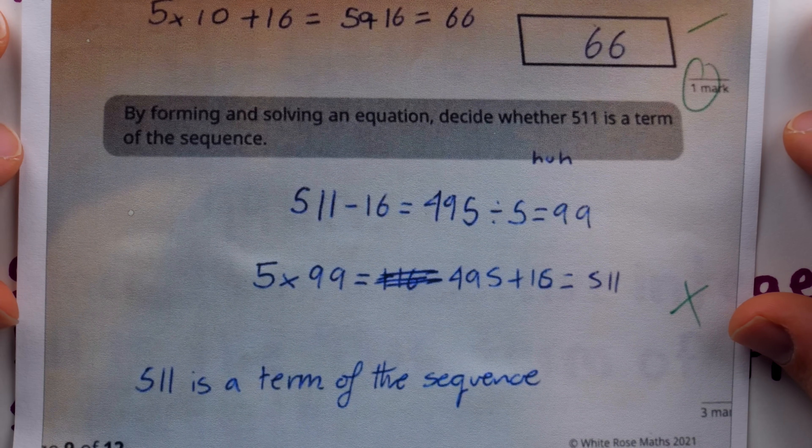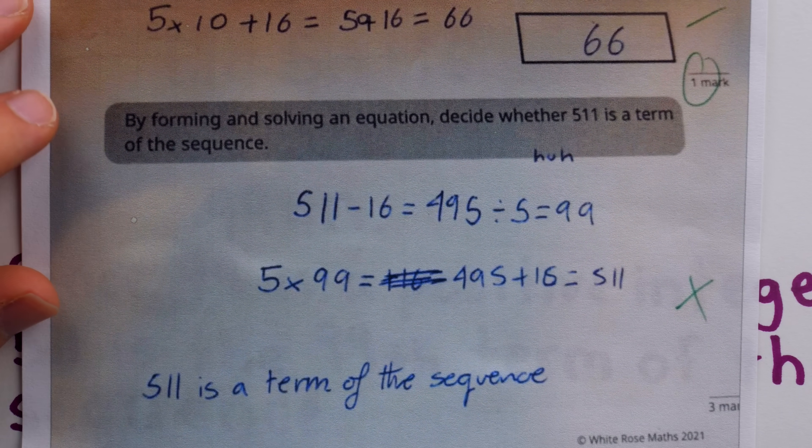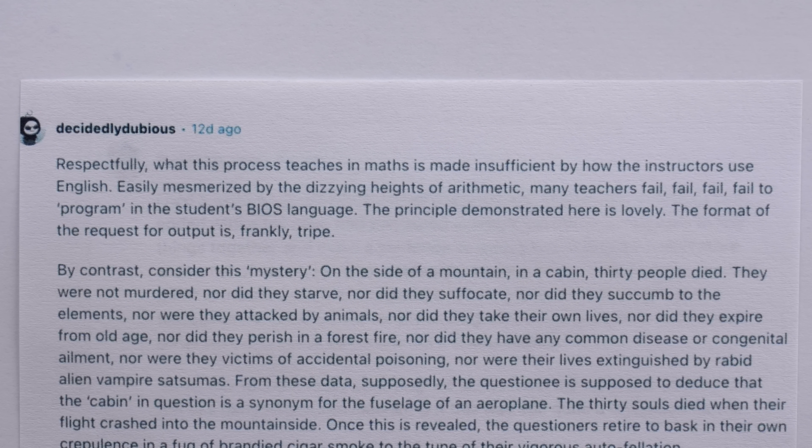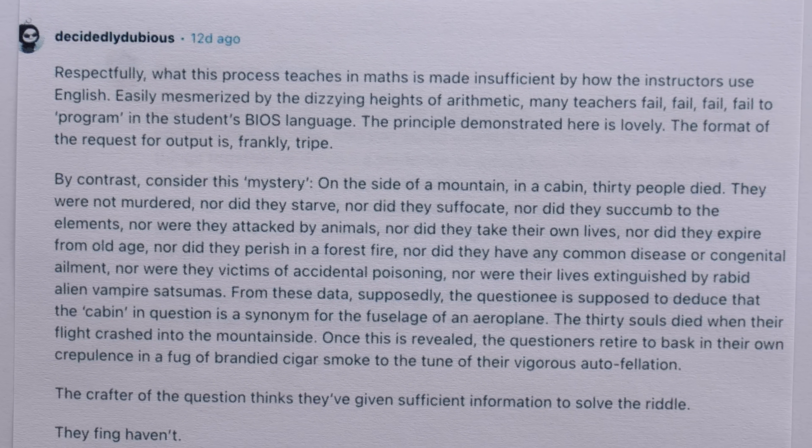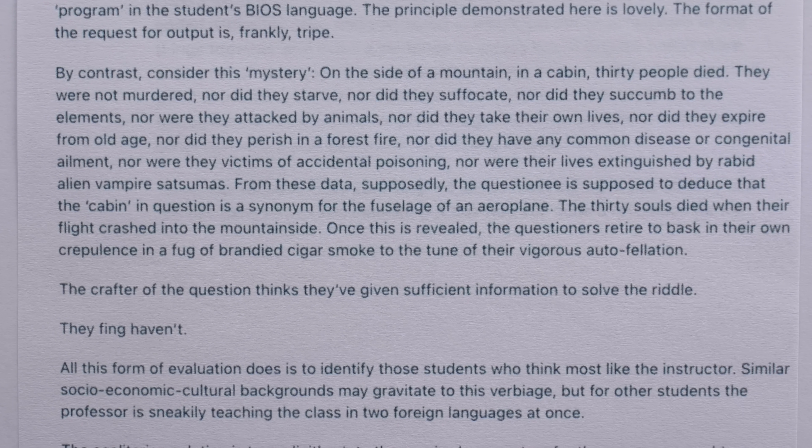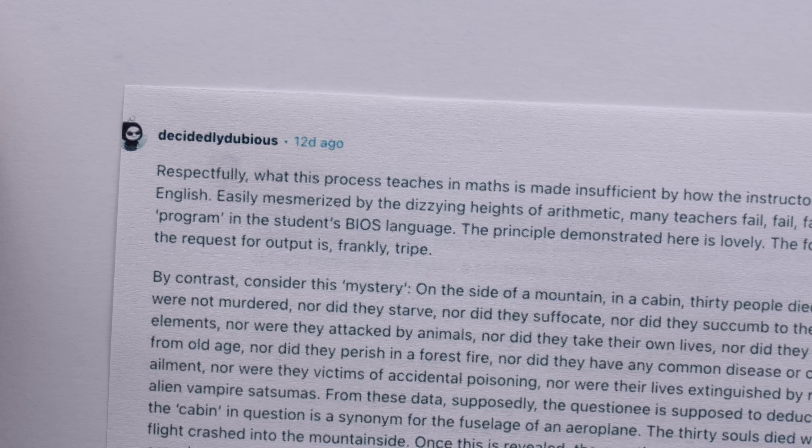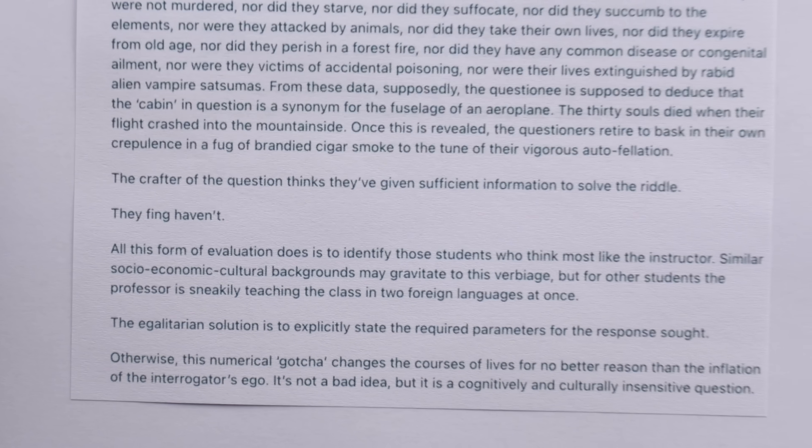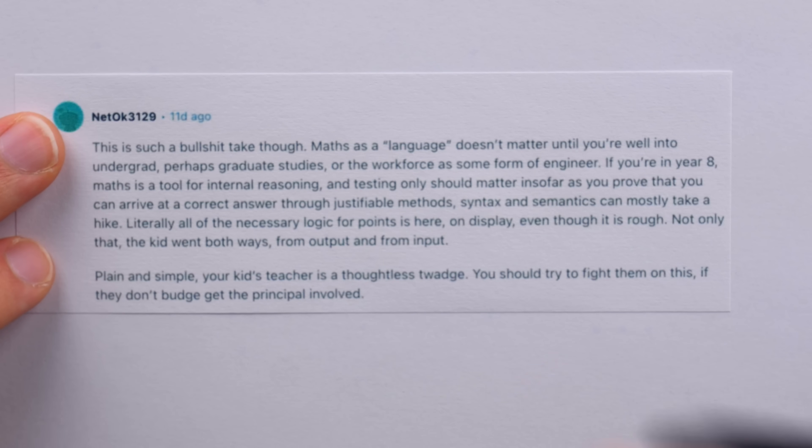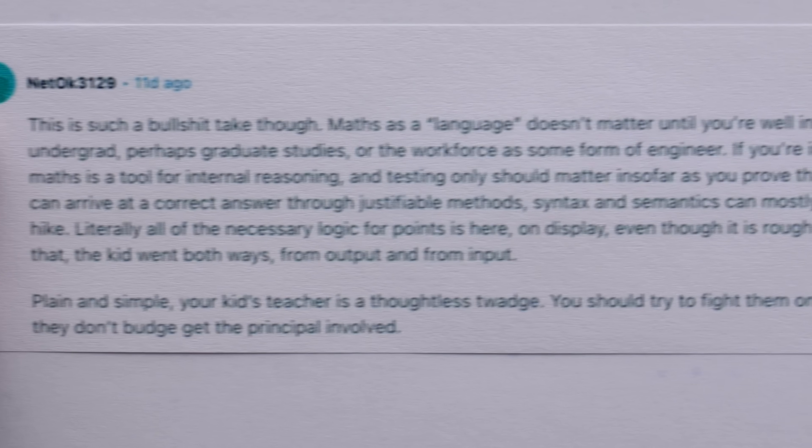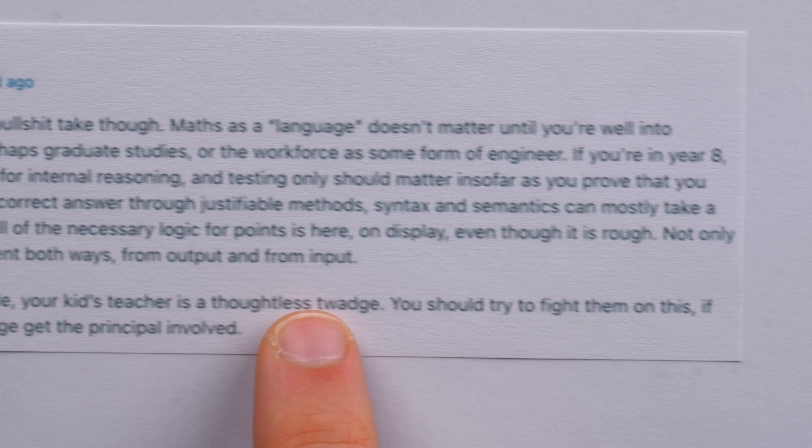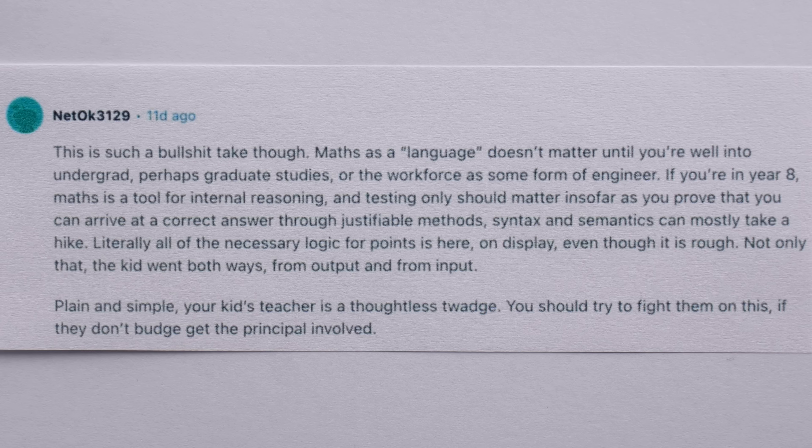Now, of course, you might think my teacher's not like that and that sucks. But certainly, in general, your teacher's going to have an easier time rewarding you more partial credit if your work is clear and easy to understand. Speaking of clear and easy to understand, this one cracked me up. This fella criticizes teachers feeling smug and superior for writing problems that most students won't understand in the way they intend. And he does this while writing some of the most over-the-top flowery prose I have ever seen on Reddit. Nothing says clear and direct communication like a comma separated frankly. I can't help but wonder how frank the rest of this prose is. I can't lie. I like flowery prose, but I don't know. I got a kick out of this. This fella totally disagrees with the student earning no marks. He says this is such a take though. Math as a language doesn't matter until you're well into undergrad, perhaps graduate studies or the workforce. Plain and simple, your kid's teacher is a thoughtless twaj. You should try to fight them on this. If they don't budge, get the principal involved. I understand why someone would have this take, but I totally disagree.